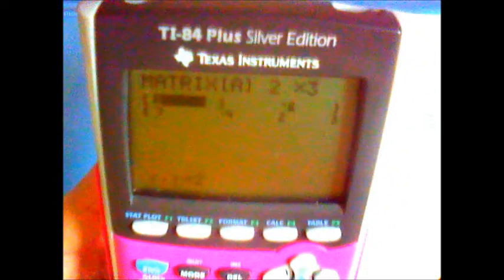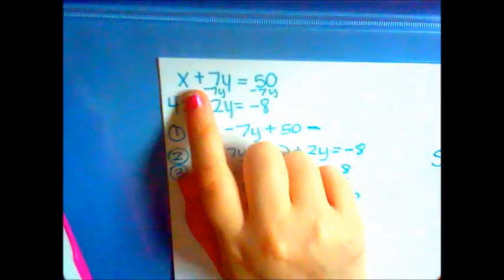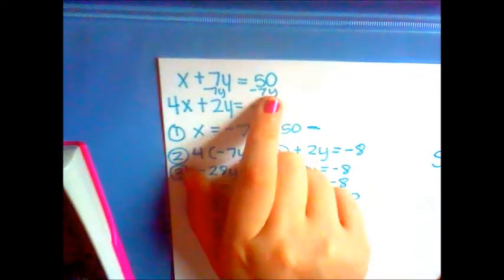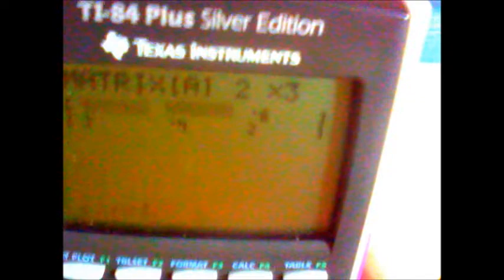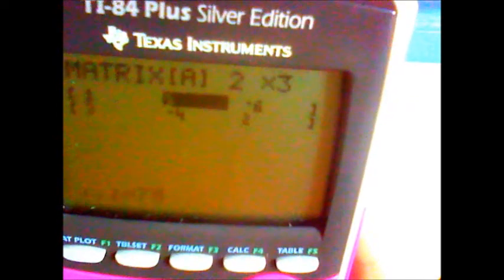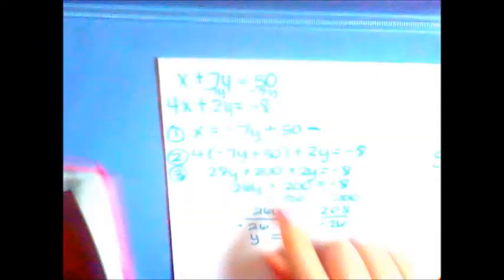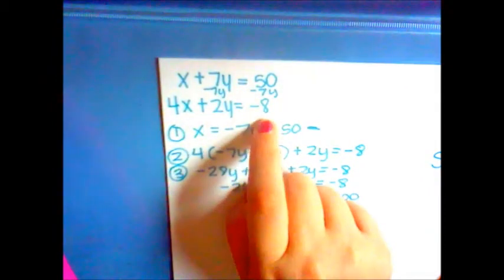Now you add the numbers that are on the paper. In the first column you would do 1, 7, and 50. In the second column you would put 4, 2, and negative 8.